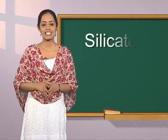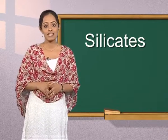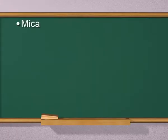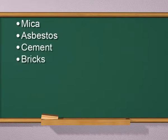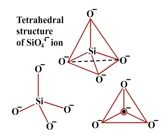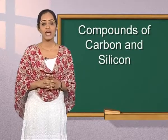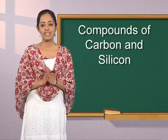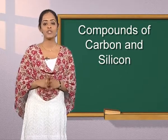Earth's crust contains silicate minerals and a large amount of aluminosilicates. Mica, asbestos, cement, bricks, tiles, porcelains, glass, pottery, etc. are all forms of silicates. X-ray studies have shown that the basic structural unit in all silicates is the SiO₄⁴⁻ tetrahedron. These SiO₄ tetrahedral units can occur singly or in groups sharing one oxygen atom, but never by sharing edges or faces. Depending upon the number of tetrahedral units and their linkage, silicates are of many types. Glass and cement are two important man-made silicates.